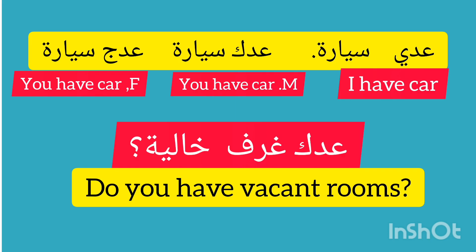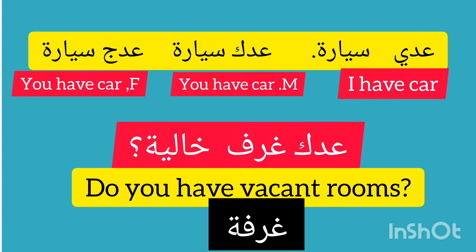In the Iraqi dialect, as I said before, we don't say 'indi sayara' — we say 'idi sayara' meaning 'I have a car,' or 'idi kitab' meaning 'I have a book.' 'Idich sayara' means 'you have a car.' For example, 'itak ghurfat khalia?' means 'do you have a vacant room?' — where 'ghurfat' is the plural form.